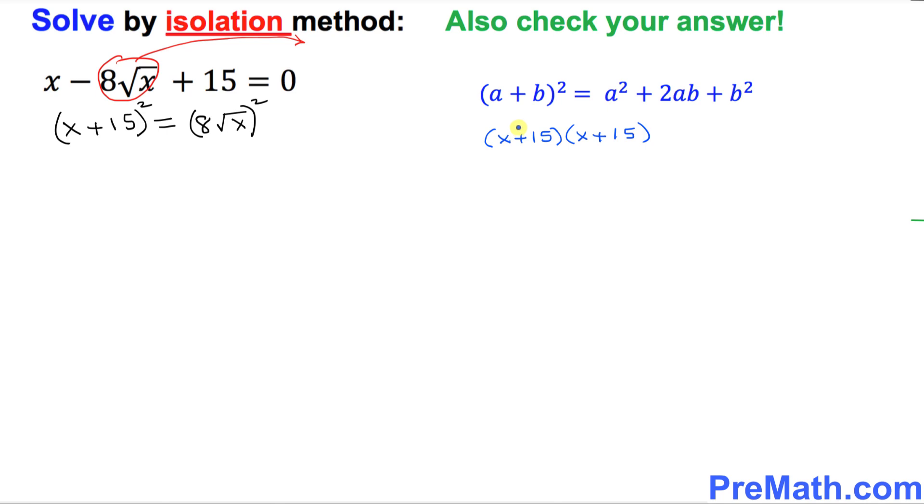We can apply the rainbow method, x times x, and then this way, foil method or rainbow method. So you're going to do this thing. So that's going to give you x square plus 15x plus 15x.